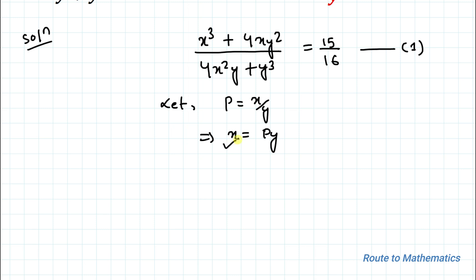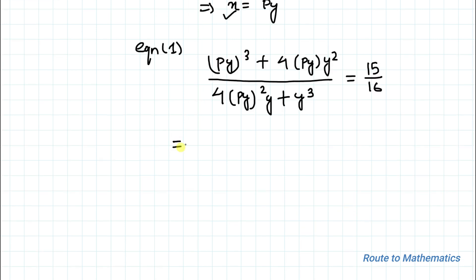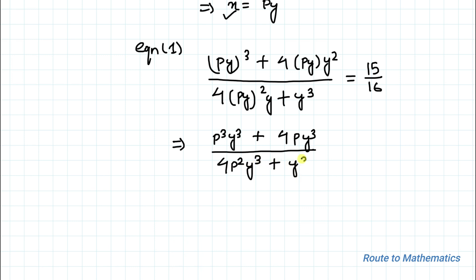Now let's substitute the value of x in equation 1. We have (py)³ plus 4(py)(y²) divided by 4(py²)(y) plus y³ equals to 15 by 16. This gives us p³y³ plus 4py³ divided by 4p²y³ plus y³ equals to 15 by 16.